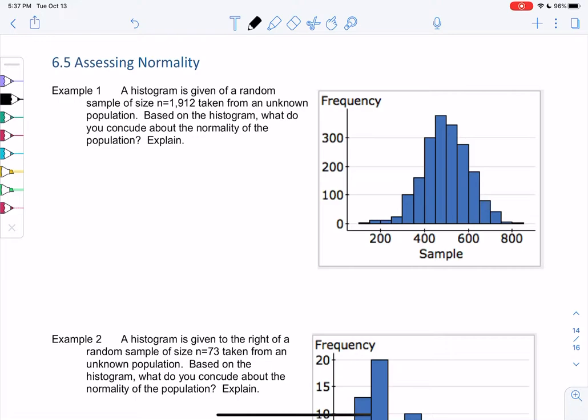This section is when we need to decide if we even should use the normal curve with real data. In other examples we've kind of been told things are normal, but if we have real data we need to decide if it's appropriate to use the normal curve. So how to decide if we should use the normal curve.